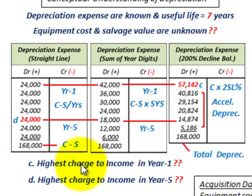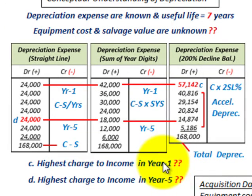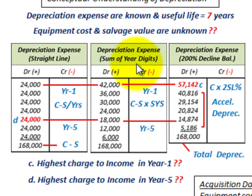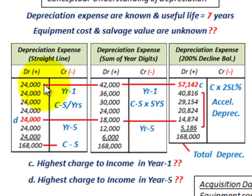Next, we want to compare the various depreciation methods to determine the highest charge to income in year one and in year five. We're comparing accelerated depreciation — declining balance and sum of years digits — against straight line. For year one: straight line is $24,000, sum of years digits is $42,000, and declining balance is $57,142. So the highest amount in year one is the declining balance.